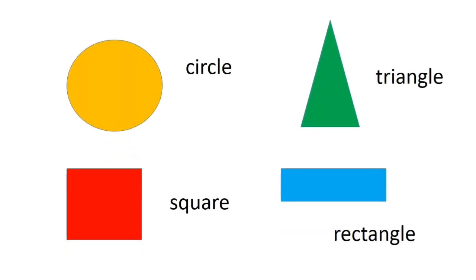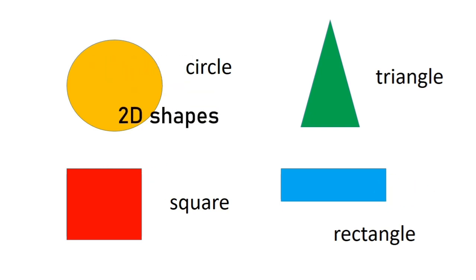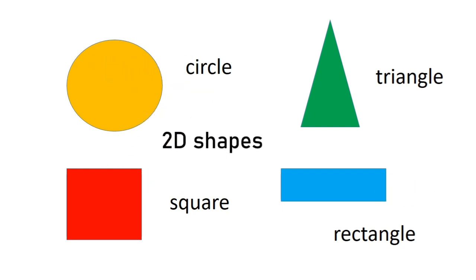Your basic shapes are circles, triangles, squares and rectangles, and these are called 2D shapes.